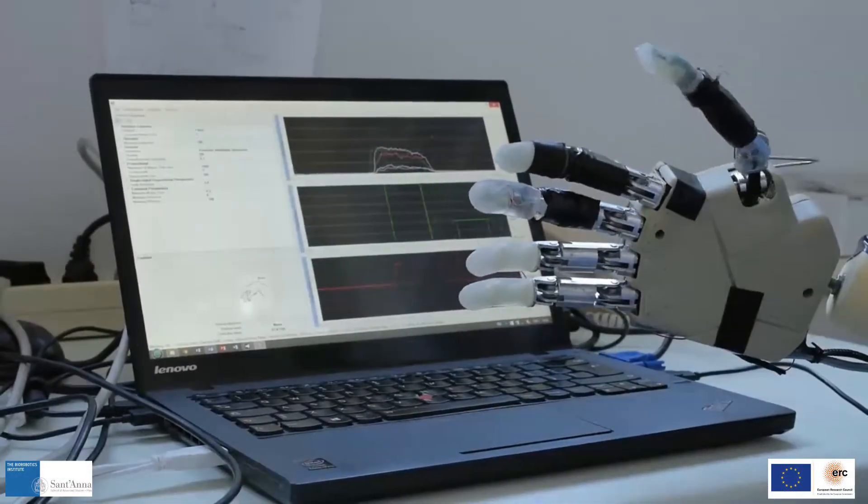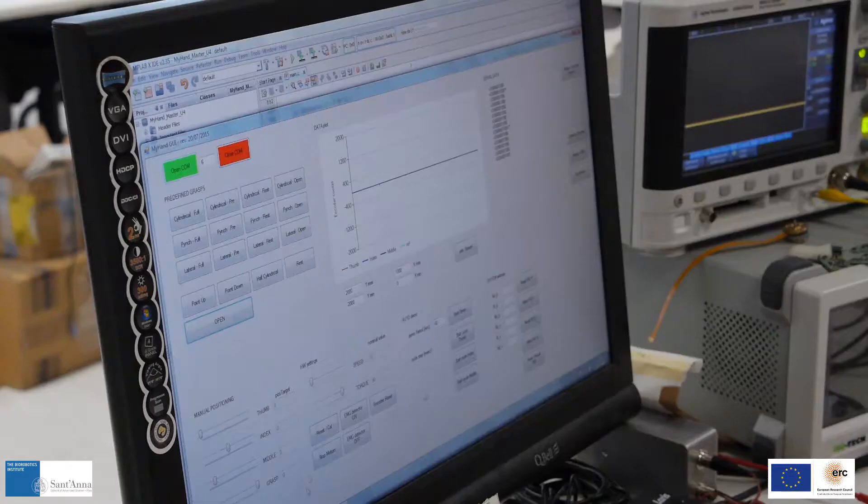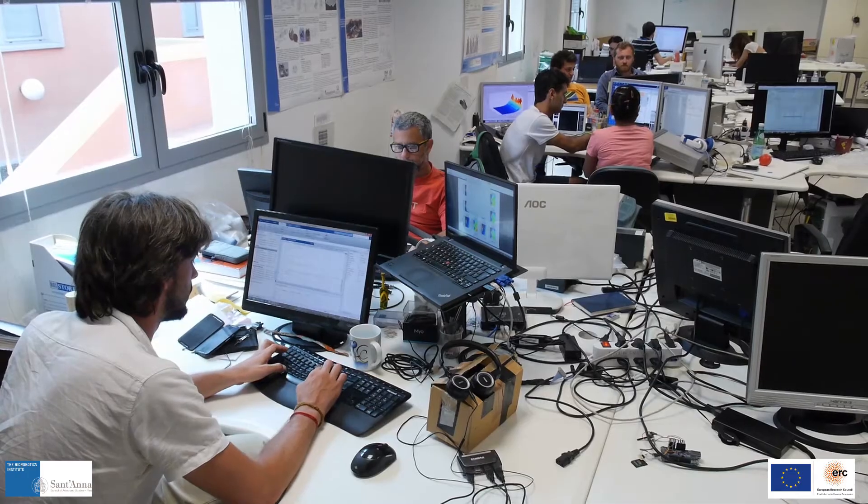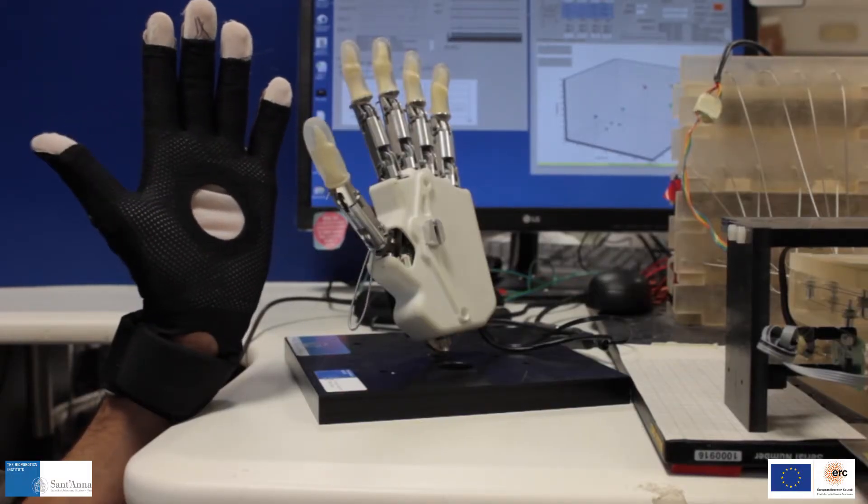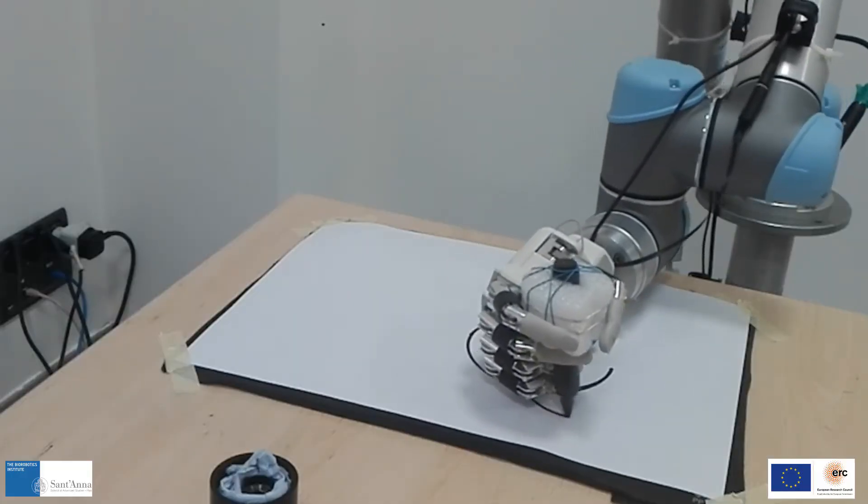Miki is a research project funded by the European Research Council that aims at developing and clinically evaluating a dexterous hand prosthesis which is naturally controlled and perceived by the amputee.